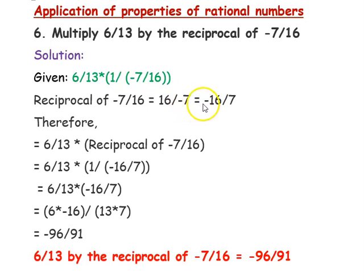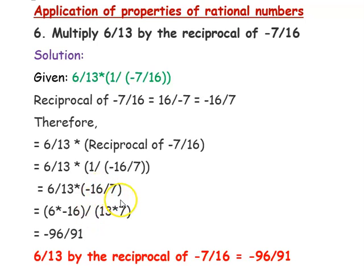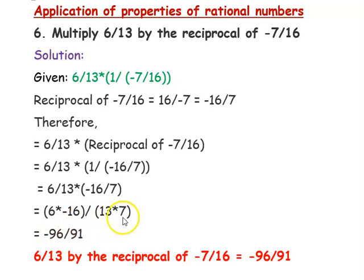We can rearrange 16/(-7) as -16/7. So we are writing 6/13 times the reciprocal of -7/16, which is -16/7. This is a multiplication of two rational numbers, so we multiply numerator and denominator separately. The numerator is 6 × (-16) = -96, and the denominator is 13 × 7 = 91. So the answer is -96/91.